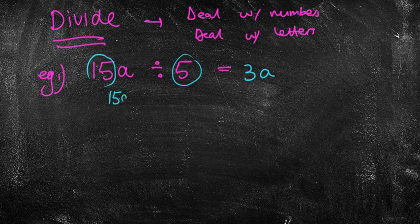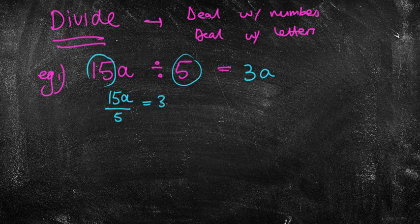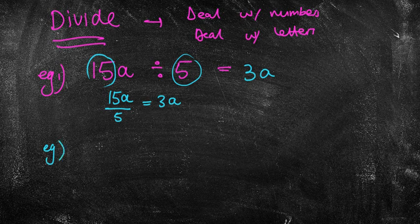Now remember this could be written as this. 15a over 5. But again 15 divided by 5 is 3. And I've just got the a on its own. We've got a. We get more challenging questions I guess like this it might be.